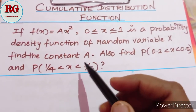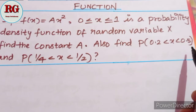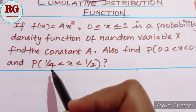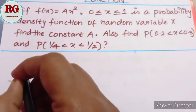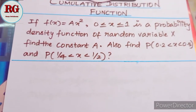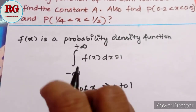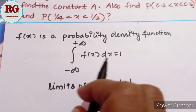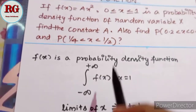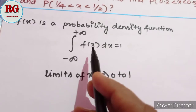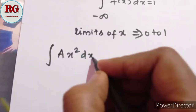If we are going to get the capital A value, the range is 0.2 to 0.5. For a probability density function, the integral from minus infinity to plus infinity must equal 1. Since x ranges from 0 to 1, the integral of A x² dx from 0 to 1 is equal to 1.